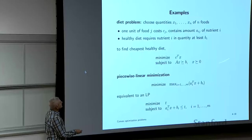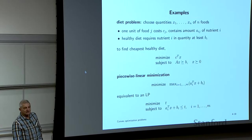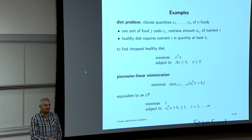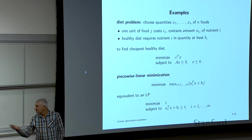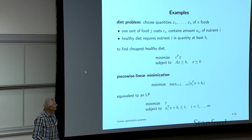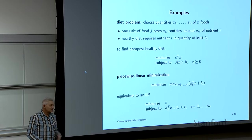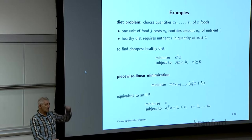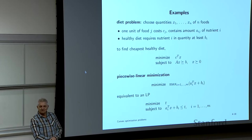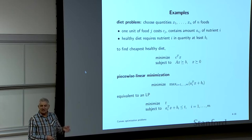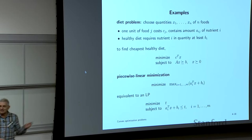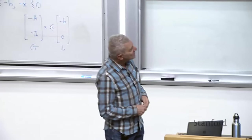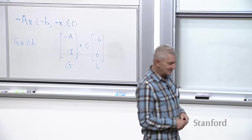Back to the diet problem: you could add an upper limit on a nutrient, or add supply availability constraints. Once you understand how to do this, you see it's very expressive. This is one of the first examples people ever talked about in linear programming.